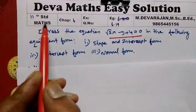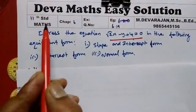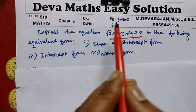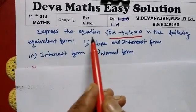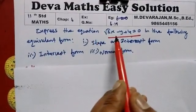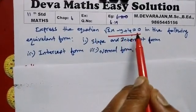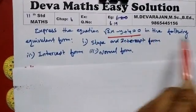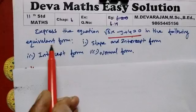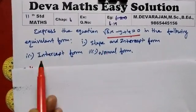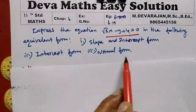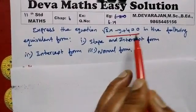Hi student, this is Deva. Now we are going to see Launcher Max chapter 6, Example 6.19. Express the equation √3x minus y plus 4 equal to 0 in the following forms: slope and intercept form, intercept form, and normal form.